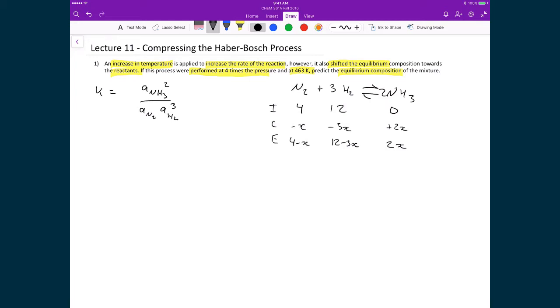So substituting these values into the equilibrium expression, we've got 1.11, which is our equilibrium constant at 463 Kelvin. On the top we have 2x all squared divided by 4 minus x times 12 minus 3x raised to the power of 3.